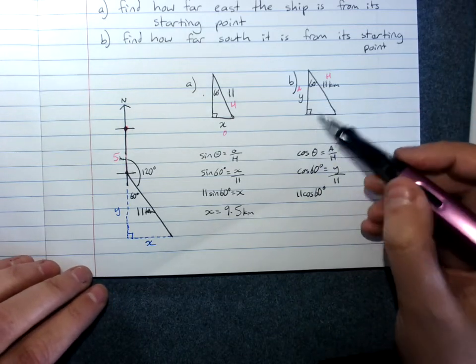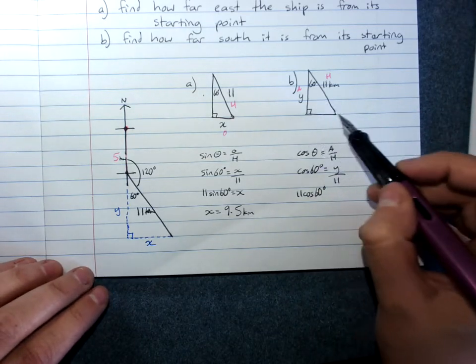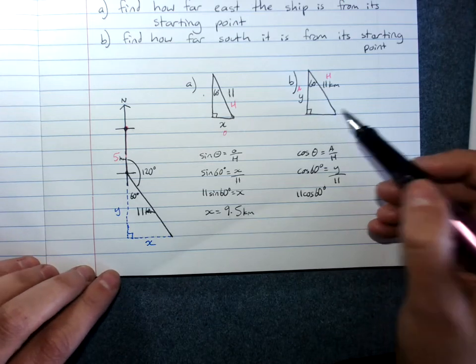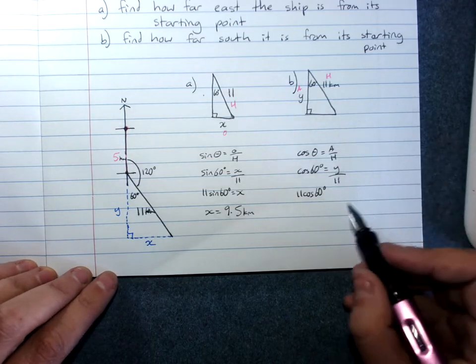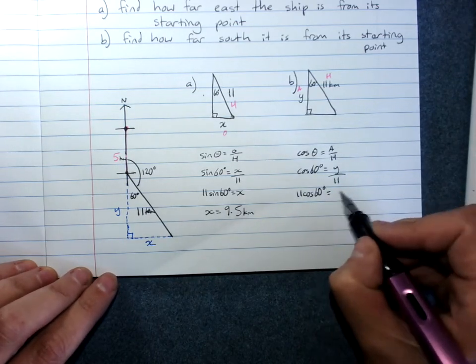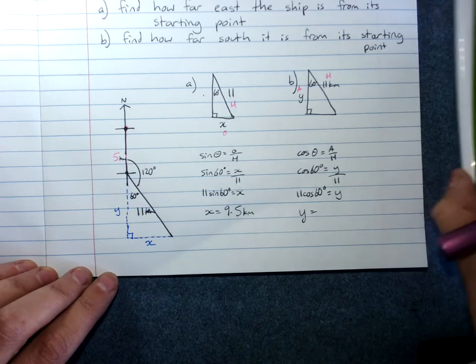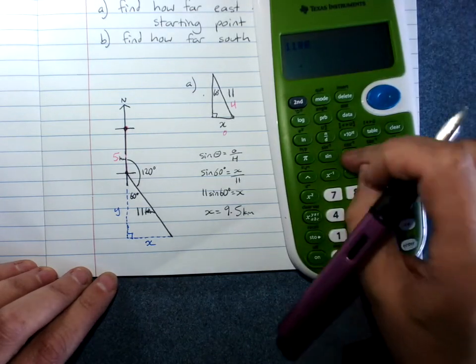Incidentally, the other thing you could have done here was Pythagoras, because we did just find this value here, and that would be quicker, perhaps, because we already knew two sides of this triangle, but you can also use trig. 11 times cos 60.